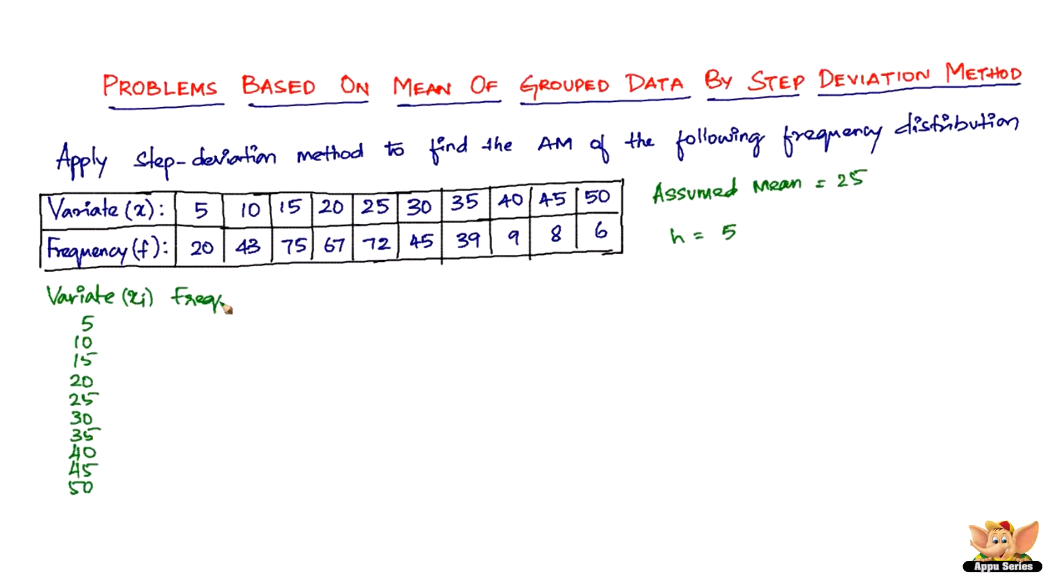Then we've got the frequency F_I: 5 is 20, 10 is 43, 15 is 75, 20 is 67, 25 is 72, 30 is 45, 35 is 39, 40 is 45, 45 is 8, and 50 is 6.